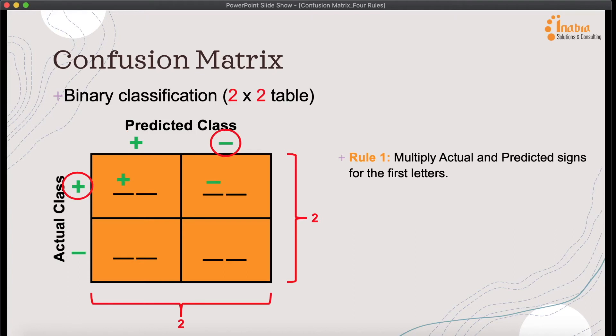The next step, Rule Number Two: convert positive to the letter T, which is True, and negative to the letter F, which is False. So we convert the first positive to T, negative to F, negative to F, positive to T.